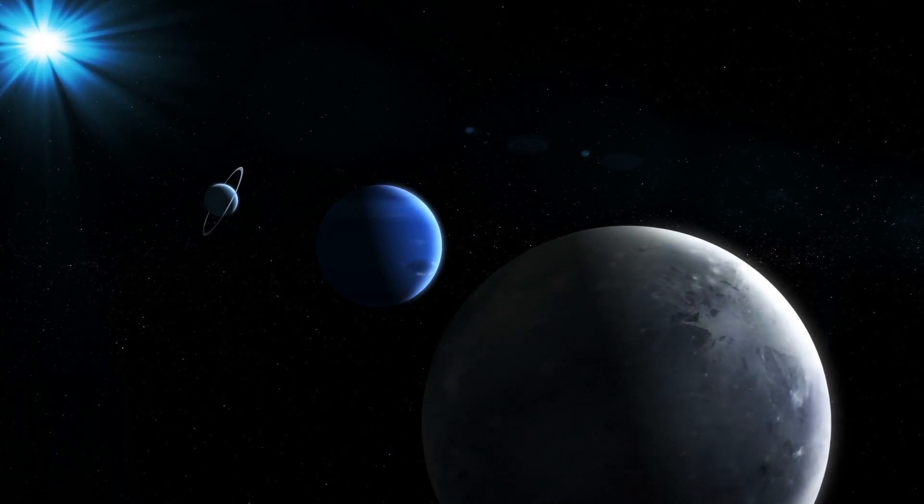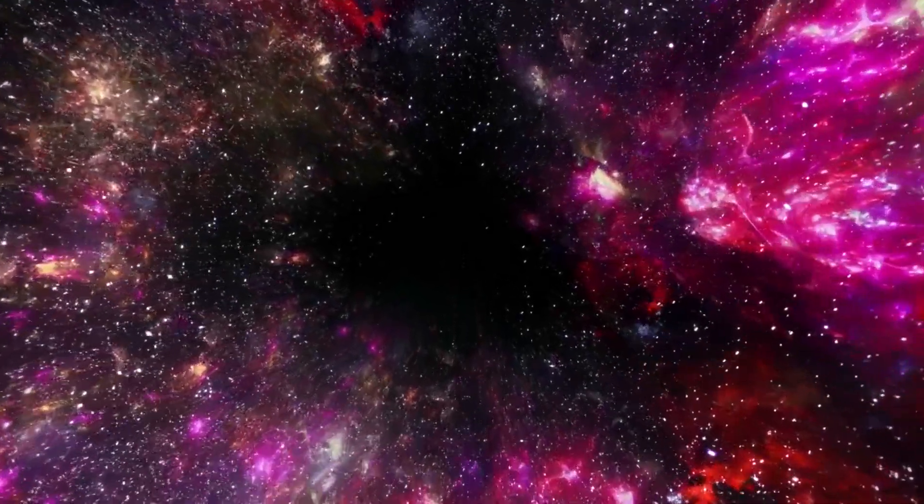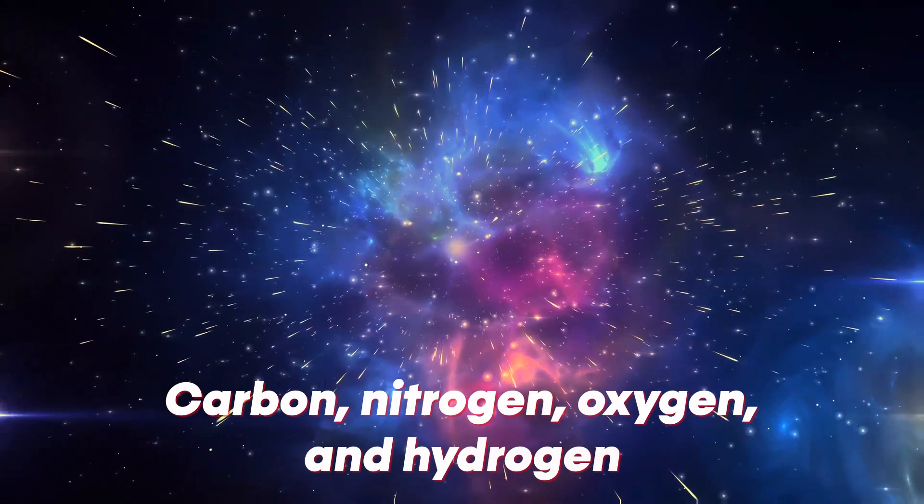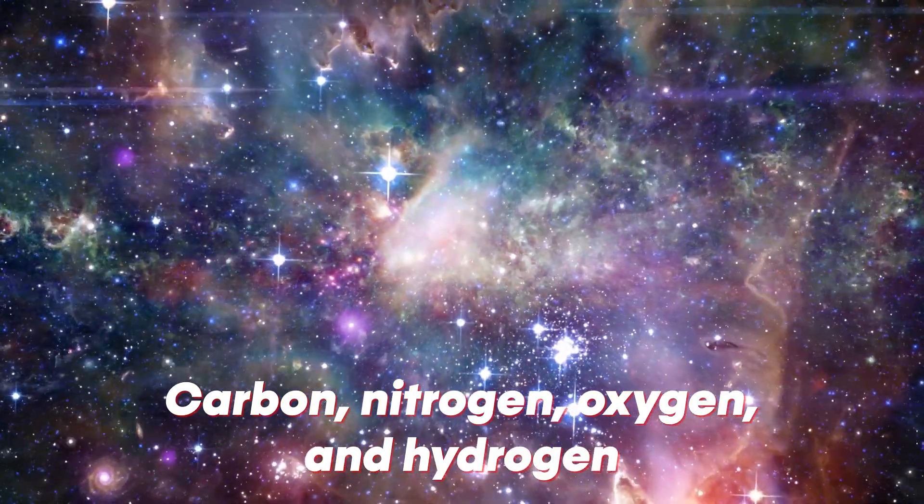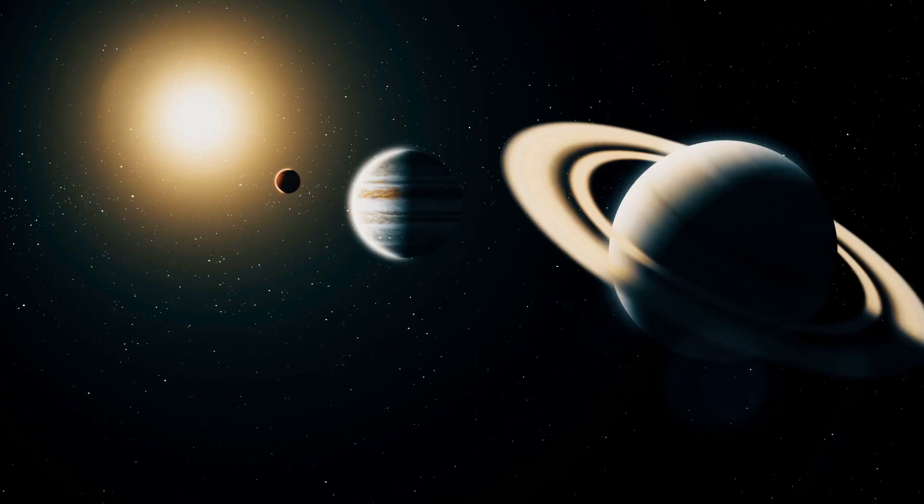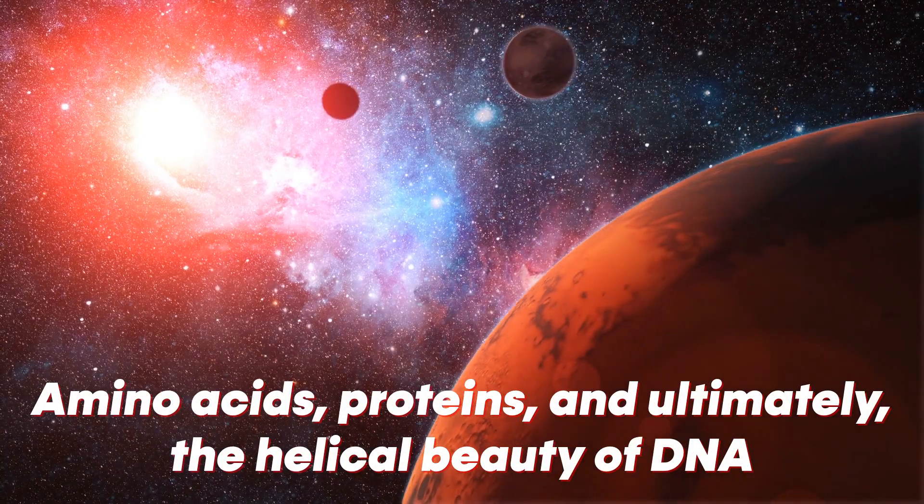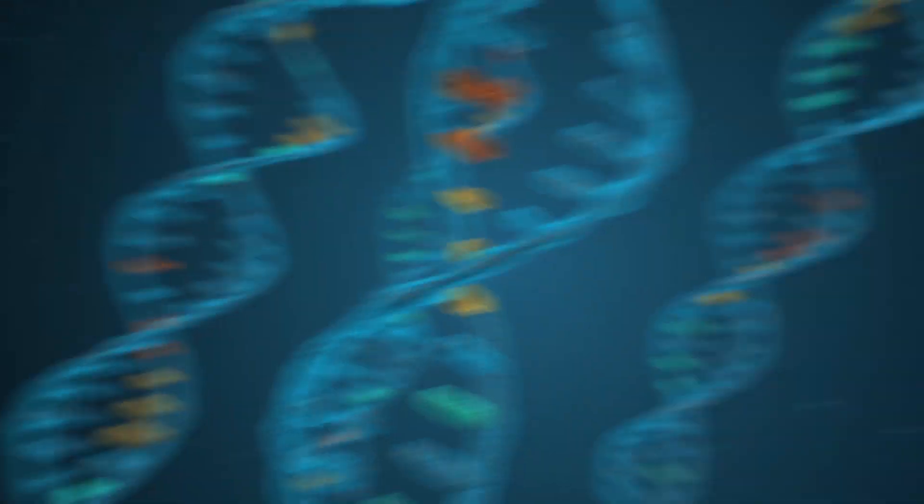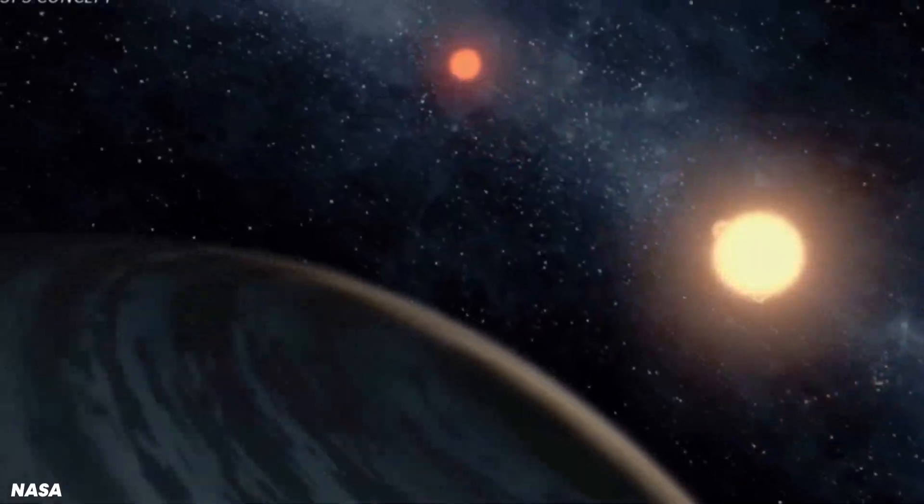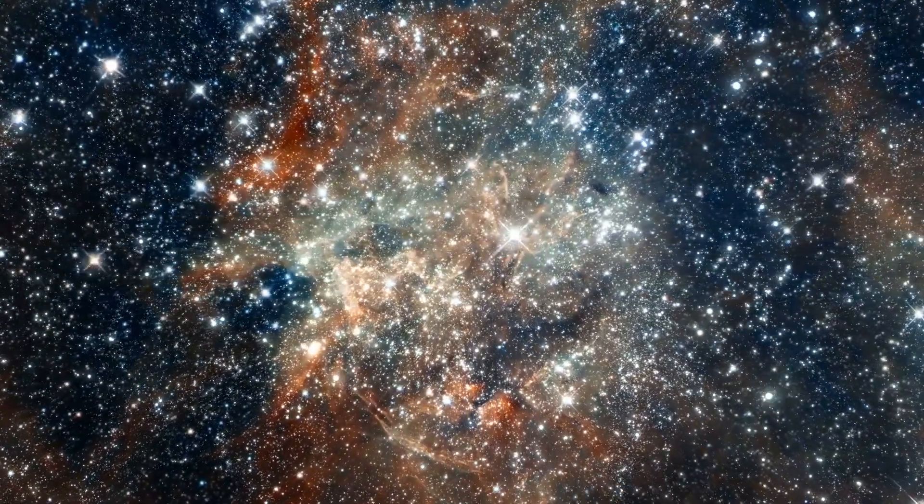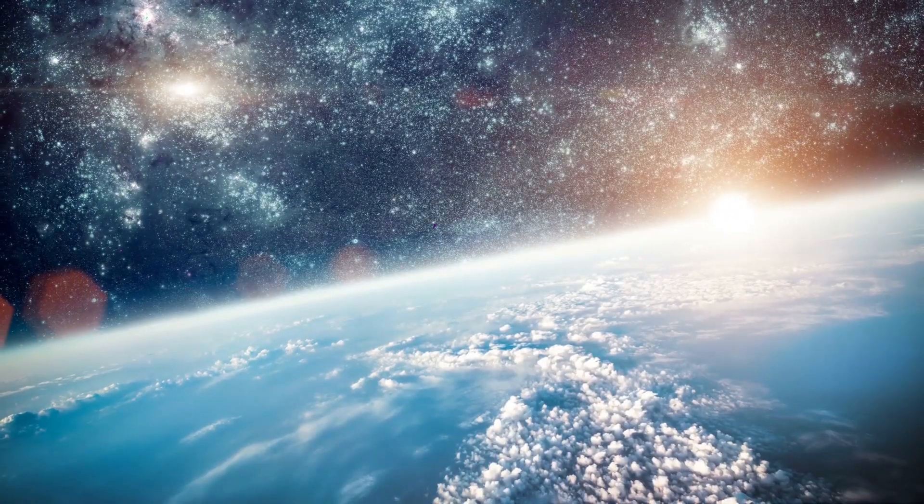Life, as we understand it, depends on a complex orchestra of organic elements like carbon, nitrogen, oxygen, and hydrogen. These elements combine in intricate ways to form amino acids, proteins, and ultimately the helical beauty of DNA, the blueprint of life. But how did these organic elements come to our planet? And how did they evolve into such complex structures?